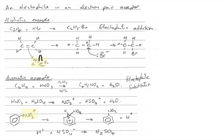Obviously you've got a few options here — for the aliphatic example you could have gone for any alkene with a hydrogen halide or halogen. For the aromatic example you could have used benzene with a halogen, or the acylation reaction, or the alkylation reaction.